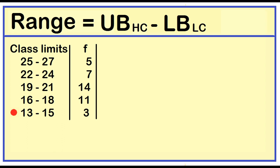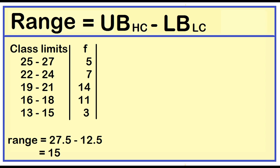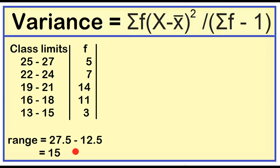To find the lower boundary, just subtract 0.5 from the lower limit. 13 minus 0.5 is 12.5. The range is 27.5 minus 12.5, which equals 15.